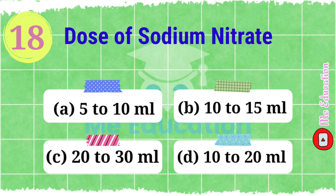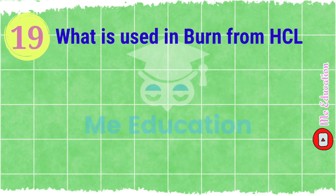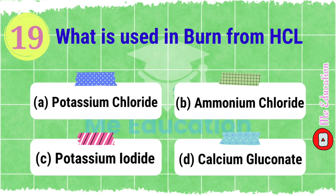Question number nineteen: what is used in burns from hydrochloric acid? Options: A) potassium chloride, B) ammonium chloride, C) potassium iodide, D) calcium gluconate. The right answer is option D, calcium gluconate.